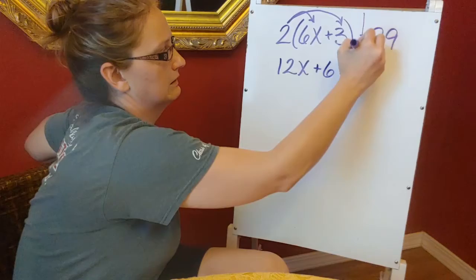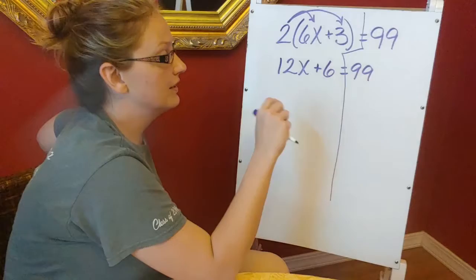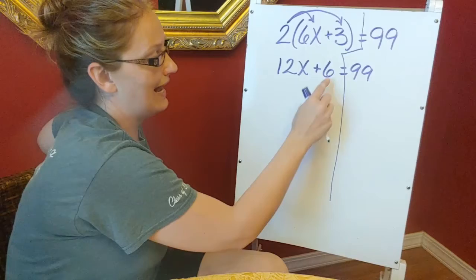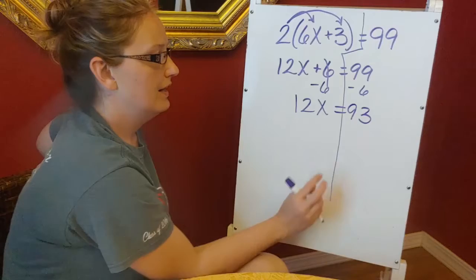So I'm going to take this 2 and multiply it by 6x to get 12x. And then I'm going to multiply 2 times 3, which gives me 6. Equals 99. Once I distribute, this is just a two-step equation. So really, this has got three steps all together. I've already distributed. I'm going to go ahead and get rid of this 6. Right now it's being added, so I'm going to subtract 6 from both sides.